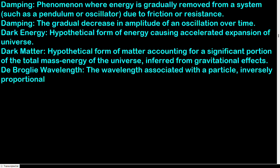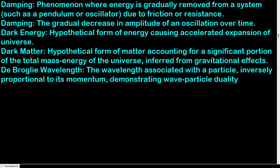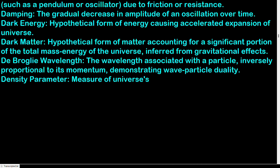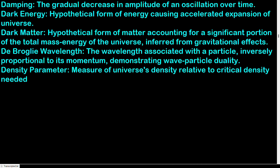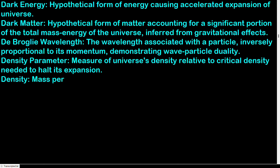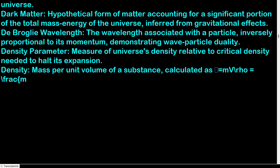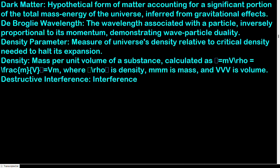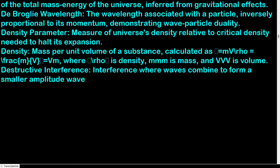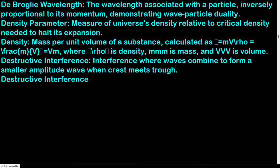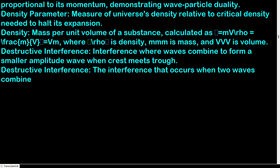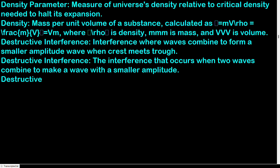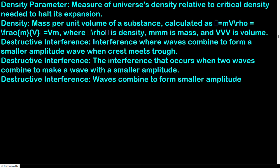De Broglie wavelength: wavelength associated with a particle, inversely proportional to its momentum, demonstrating wave-particle duality. Density parameter: measure of the universe's density relative to the critical density needed to halt its expansion. Density: mass per unit volume of a substance; ρ = m/V. Destructive interference: waves combine to form a smaller amplitude wave when crest meets trough.